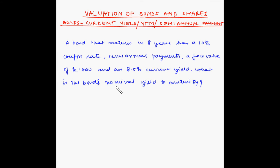Welcome to another video on valuation of bonds and shares. In this video we will look at an example involving current yield, yield to maturity, and semi-annual payments. A bond that matures in eight years has a 10% coupon rate, semi-annual payments, a face value of rupees 1000, and an 8.5% current yield. What is the bond's nominal yield to maturity?